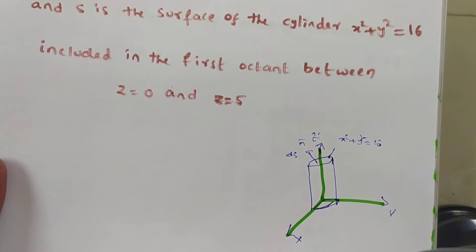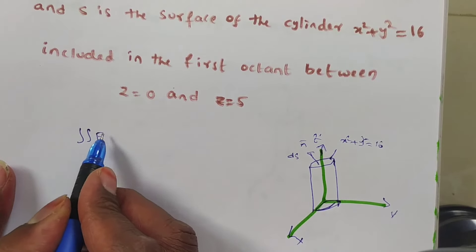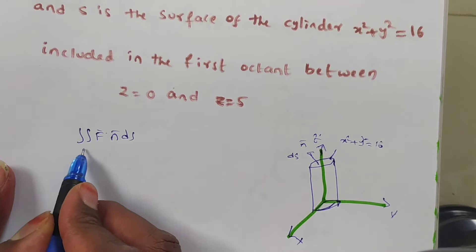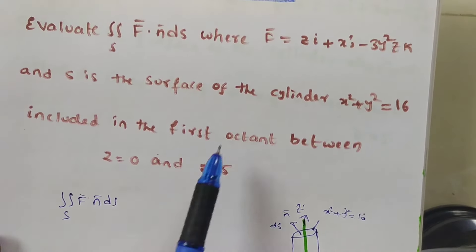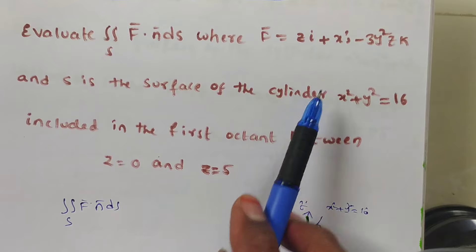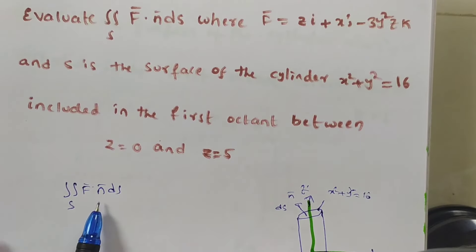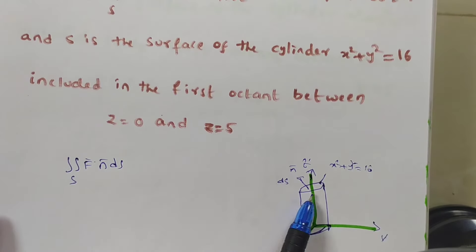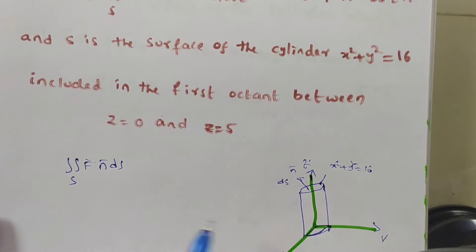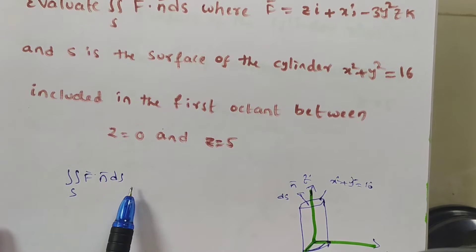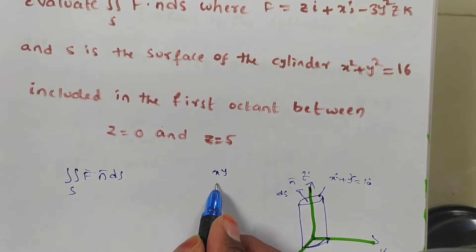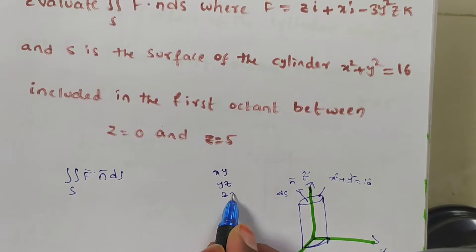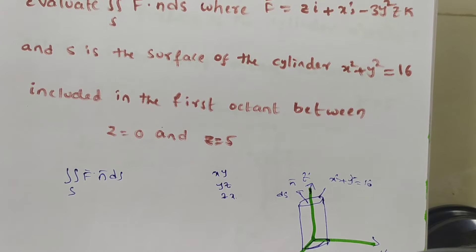To evaluate f̄ · n̄ ds, we are given f̄. Next we require n̄ for the surface x² + y² = 16. Then ds is the projection — we need to determine whether to project on the xy-plane, yz-plane, or zx-plane.